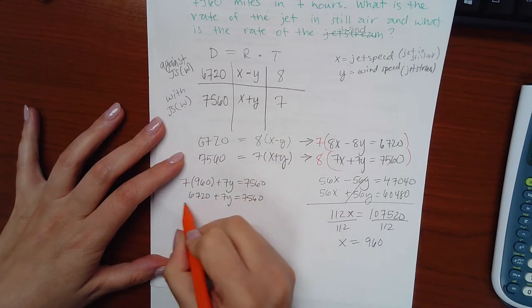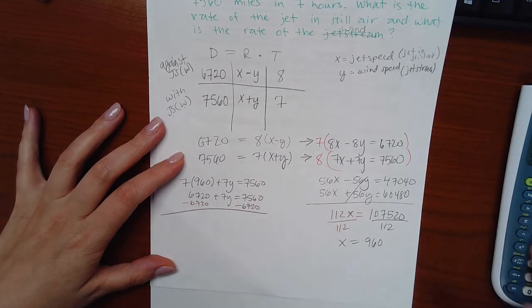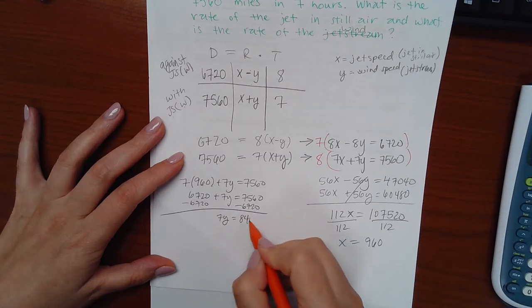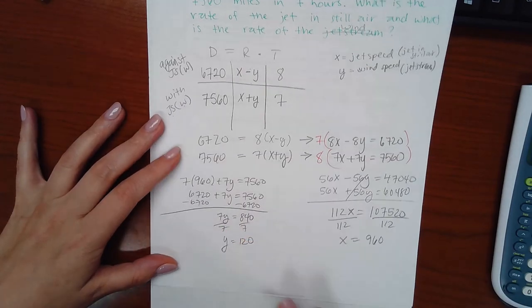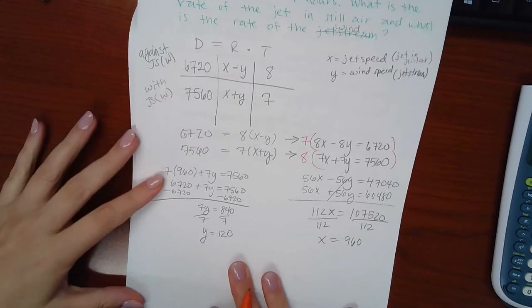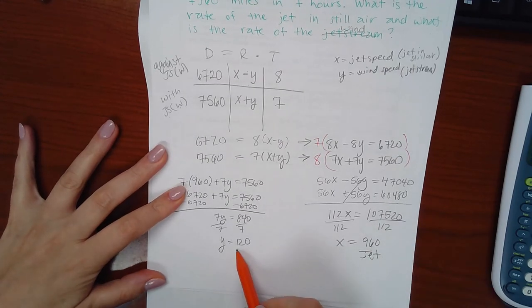And then I'm going to minus that number to help solve for Y and then I'm going to divide by seven to completely finish solving for Y and I get that Y is 120. So remember, we labeled our variables up here. So this is the jet speed in still air and this is the jet stream or the wind.